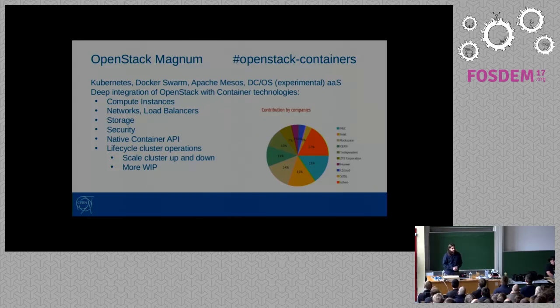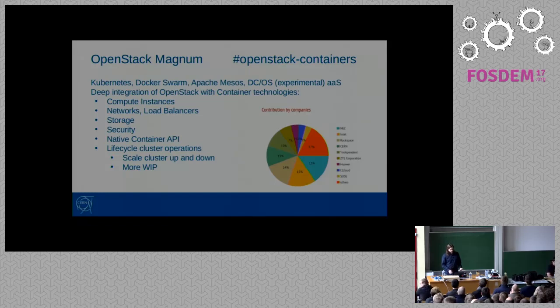Of course, you have the container native API. If you use Docker, you do docker run or docker ps, or whatever. If you use Kubernetes, you use kubectl, and for Mesos we use Marathon. DC/OS has its own UI and its own API.